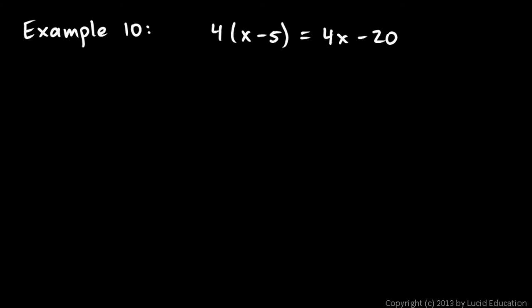And here's another one. 4 times x minus 5 equals 4x minus 20. So let's start by distributing the 4. 4 times x is 4x minus, and this is going to be 4 times 5. So that's going to be 20. 4x minus 20 equals 4x minus 20.